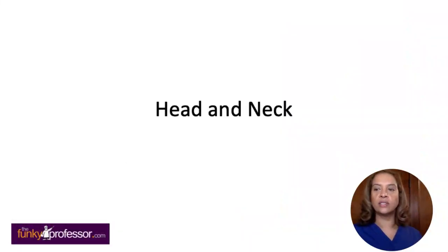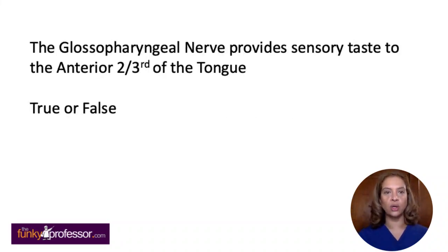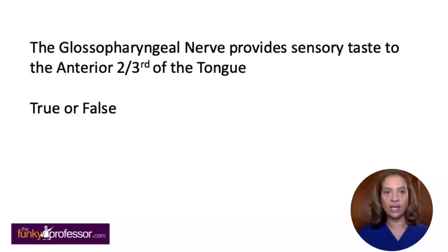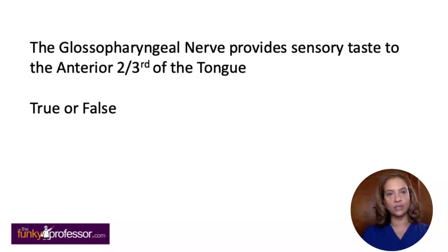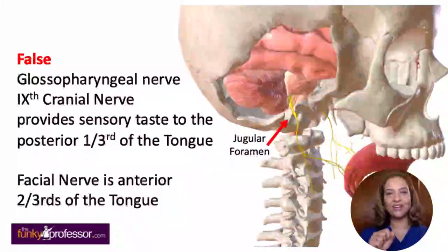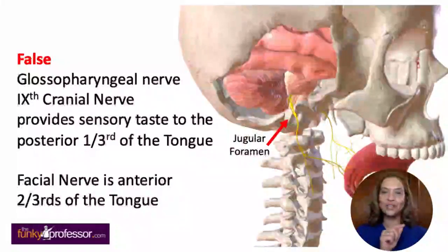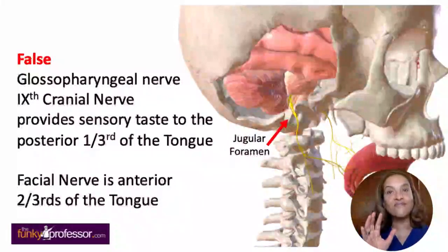Moving on to the head and neck questions. The glossopharyngeal nerve provides sensory taste to the anterior two-thirds of the tongue — is that true or false? The answer is false. The glossopharyngeal nerve is the ninth cranial nerve and it does provide sensory taste to the tongue, but not the anterior two-thirds — it's the posterior third. The anterior two-thirds of the tongue is served by the facial nerve.